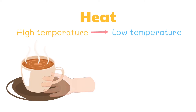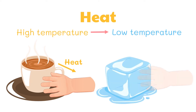For example, when a person touches a cup of hot coffee, heat is transferred from the cup towards the person's hand. On the other hand, when a person touches an ice cube, heat will be transferred from the person's hand towards the ice cube.